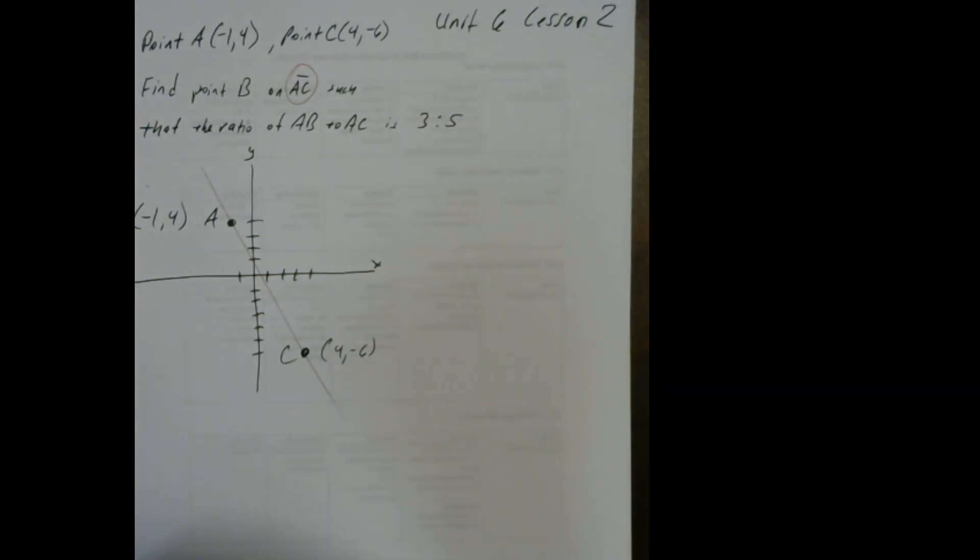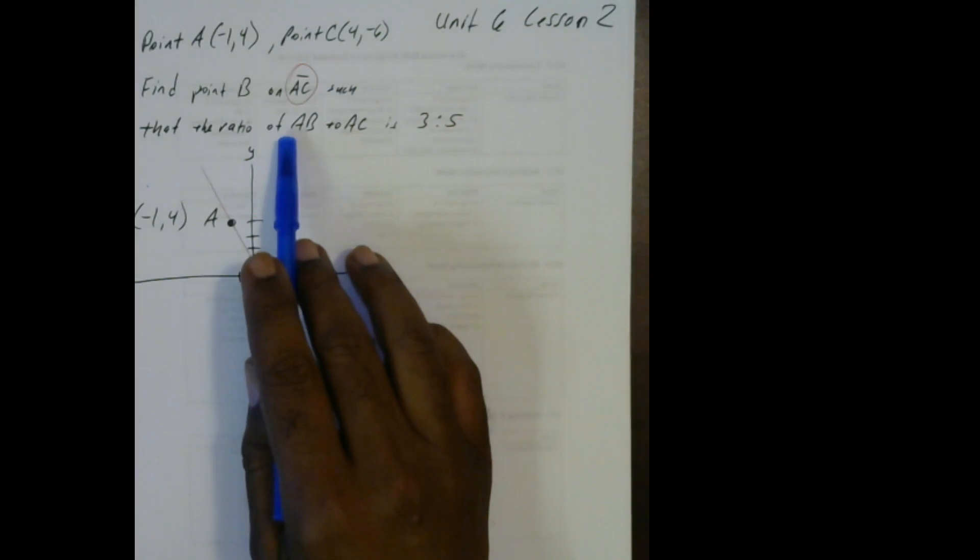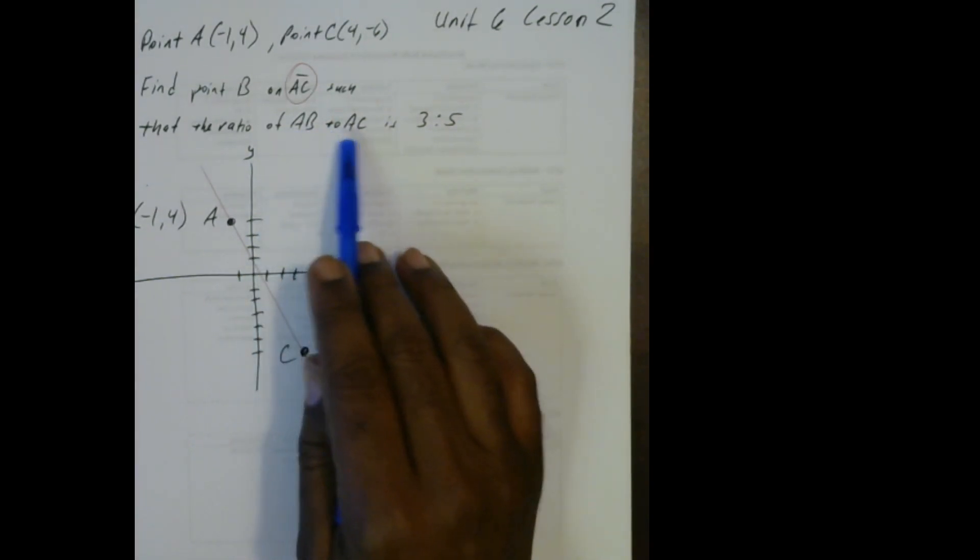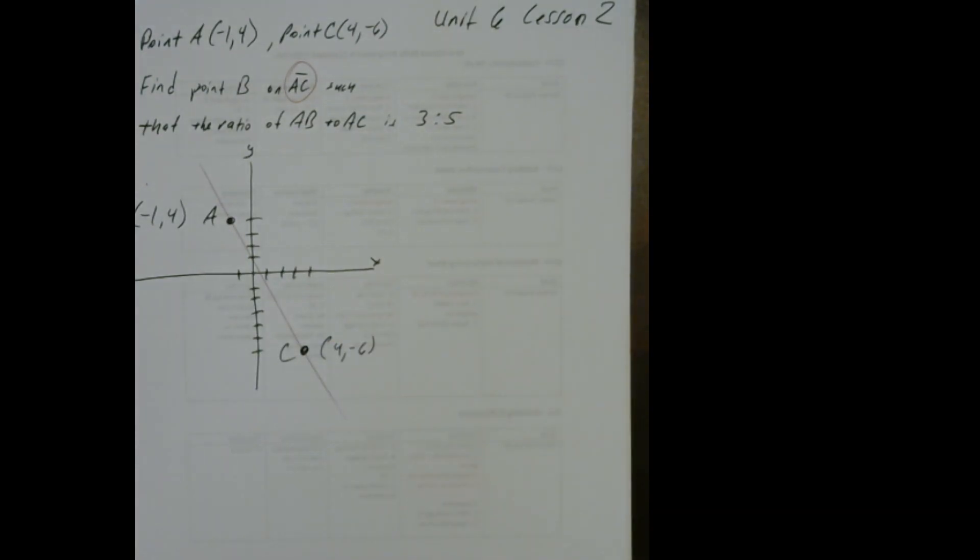We've got to find point B somewhere on that AC line. What we're looking for is a ratio from A to B and B to C that has to be 3 to 5. Now let's see what kind of ratio we have already. There is a ratio already between A to C.